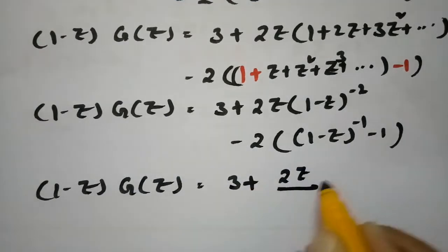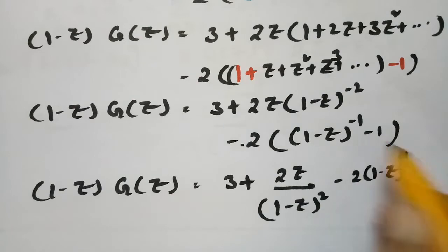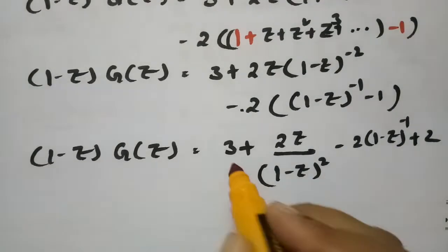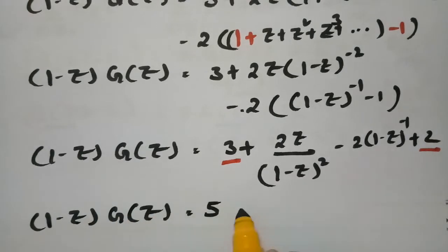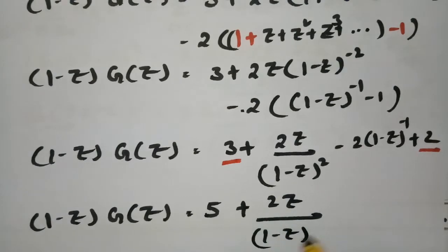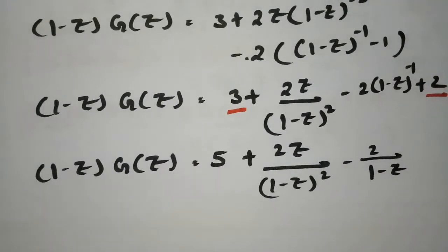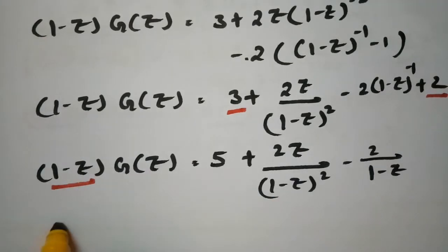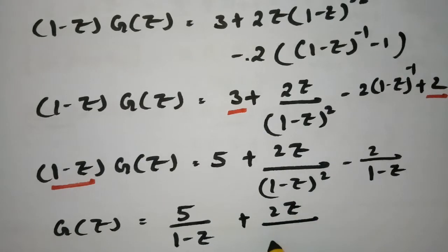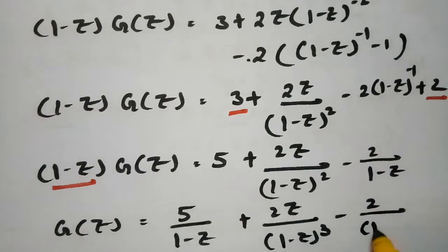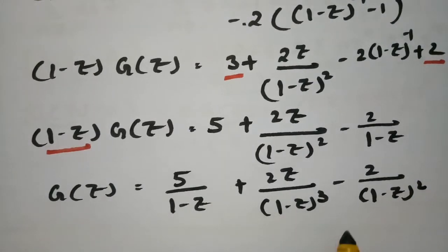Therefore (1−z)·G(z) = 3 + 2z/(1−z)² − 2/(1−z). Combining the constant terms: 3 minus 2 gives 3, plus 2 = 5. So (1−z)·G(z) = 5 + 2z/(1−z)² − 2/(1−z). Sending (1−z) to the right-hand side: G(z) = 5/(1−z) + 2z/(1−z)³ − 2/(1−z)².